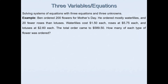In this example, Ben ordered 200 flowers for Mother's Day. He ordered mostly water lilies and 20 fewer roses than lotuses. Water lilies cost $1.50 each, roses at $5.75 each, and lotuses at $2.60 each. The total order came to $589.50. The question asks: how many of each type of flower was ordered?